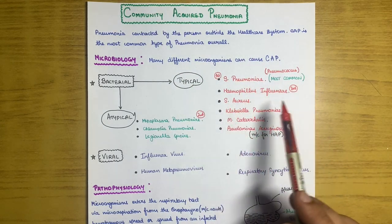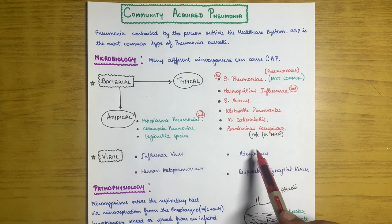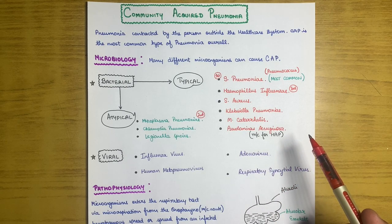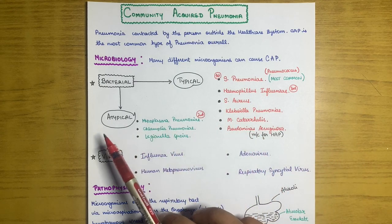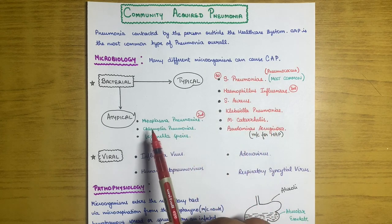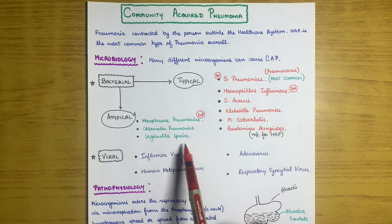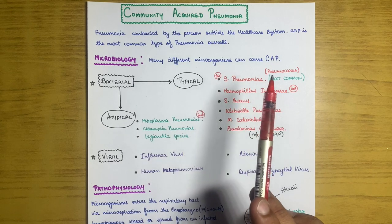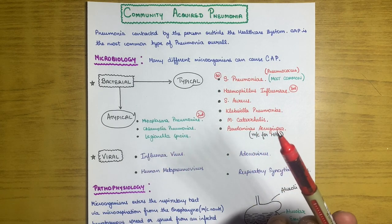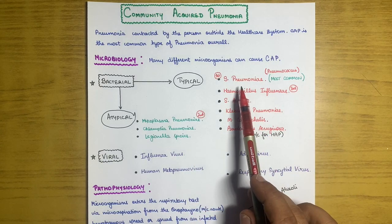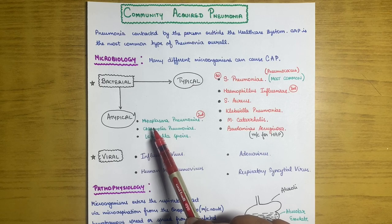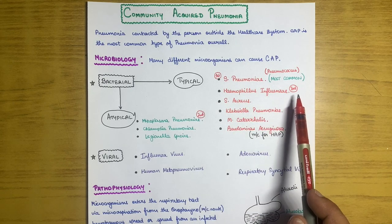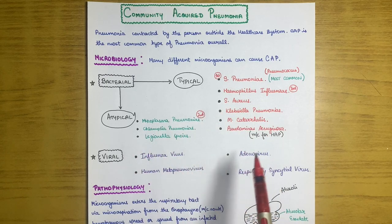An important point: Pseudomonas aeruginosa is most commonly the cause of hospital acquired pneumonia. The atypical bacteria causing CAP are Mycoplasma pneumoniae, Chlamydia pneumoniae, and Legionella species. In an examination, if Streptococcus pneumoniae is not given as an option, mark Mycoplasma pneumoniae as the second most common cause of CAP, and Haemophilus influenzae as the third most common.